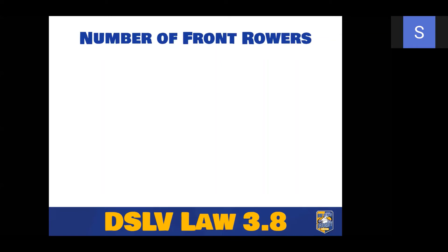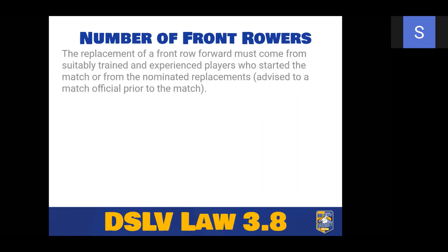A replacement of a front row forward must come from a suitably trained, experienced player. Prior to the match, teams need to advise the referee who their front rowers are and what position they play. The referee should come to each team during pre-match checks and ask about front rowers. It's important that the referee knows what position each front row player plays, as this is relevant if injuries or issues force a move to uncontested scrums.